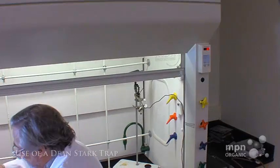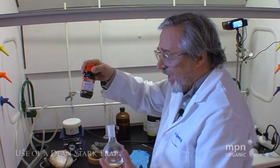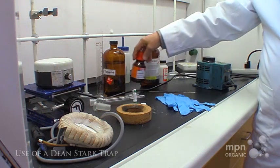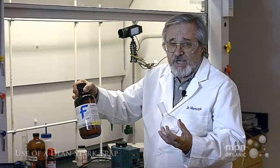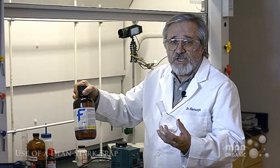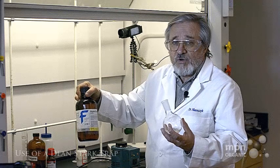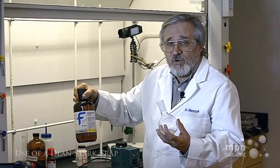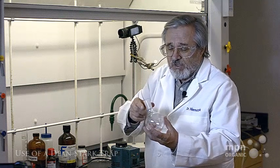What I'm going to do is take some paratolualdehyde, which is a liquid, and mix it with some ethylene glycol. Ethylene glycol is 1,2-ethanediol—it's the same stuff that you put in your radiator. You go to AutoZone, buy a quart of the stuff, and it tells you to dilute it one-to-one with water. That's ethylene glycol.